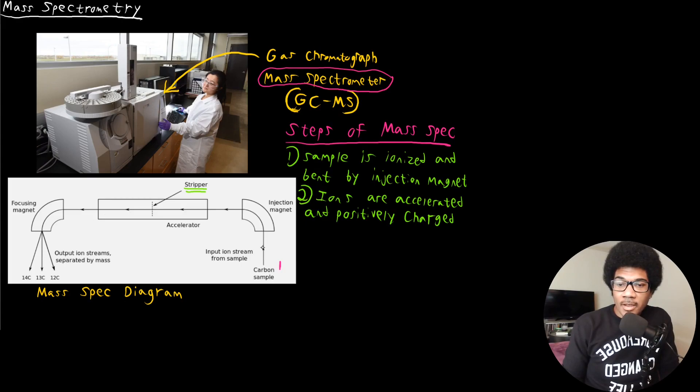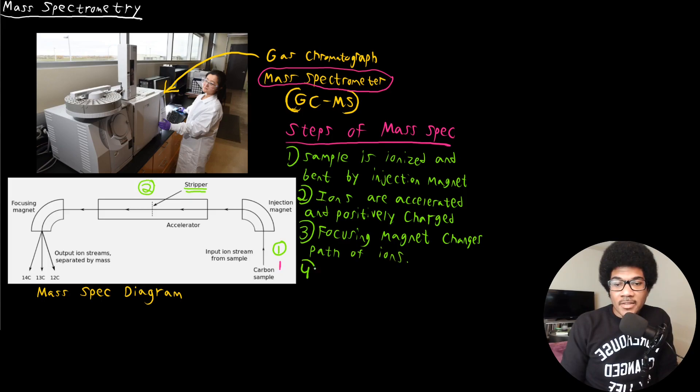So they're accelerated through the mass spec through this path and they're positively charged. Now the final step. So we're really looking at this being the first beginning, then step two, you're looking at ions being accelerated through. Now the last few steps, what happens is it interacts with this focusing magnet. So this focusing magnet is going to again change the path of your ions. So they hit the focusing magnet. So focusing magnet changes path of ions.